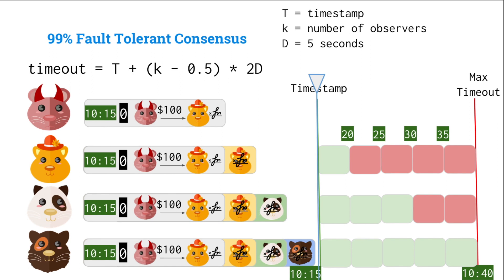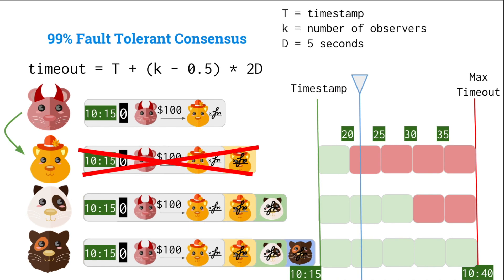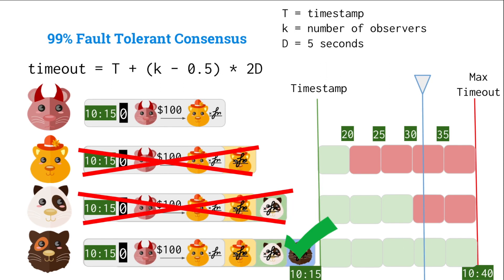We can visualize this in a graph, similar to the timeline we were looking at before. If Alice receives a transaction within the green zone, Alice will accept it. However, Alice will reject any transaction received in the red zone, because Alice knows she does not have enough time to propagate that transaction. Alice will accept and sign the message and pass it along to Jing. If received later, Alice throws out the message — no signature, no nothing. Jing, having seen Alice's and Mallory's signatures by then, will sign it. We only start accepting transactions that have been signed by everyone — that is Bob. These signatures can be ordered in whatever way.